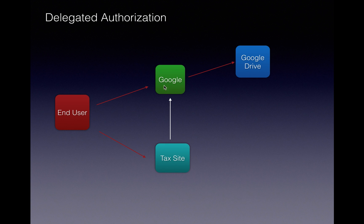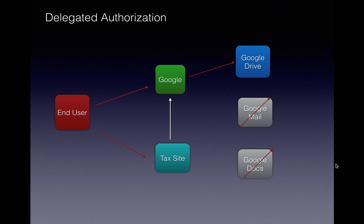You will enter your Google username and password, and from that point the tax website will be able to access your Google Drive through Google's security token. It will only access your Google Drive and not your Google Mail or Google Docs. This process of authorization is called delegated authorization, because the tax website — or you as the end user — is delegating the entire authorization process to another application.